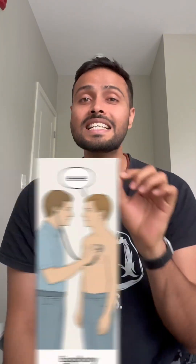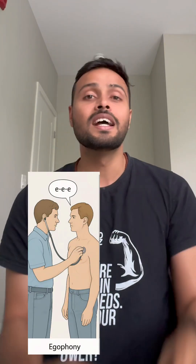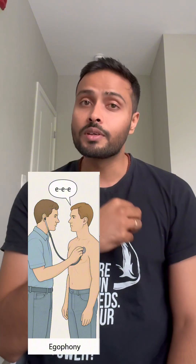Similarly, for egophony, we ask the patient to say 'E' and place the stethoscope to check whether you hear 'E' or you are hearing 'A.' If you are hearing 'A,' that means it is definitely abnormal and the patient's lung is consolidated.